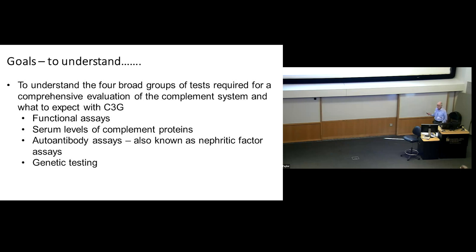To understand the complement system, there's four aspects of it. Four aspects have to be completed to have a thorough analysis of the complement system. One of those are functional assays, serum levels of complement proteins, we call those biomarkers, looking for autoantibodies—you'll hear the term nephritic factors a lot today—and genetic testing. These are the four components of a thorough complement evaluation.